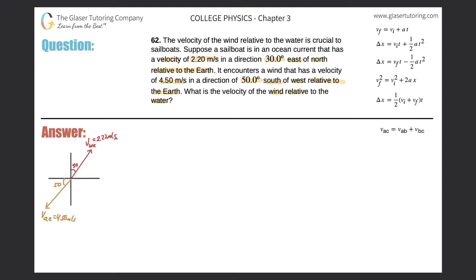So first, I sketched a little picture here. Here's a coordinate system and here are the two vectors being described. The first one is the velocity of the water relative to the earth, and that velocity is 2.20 meters per second at an angle of 30 degrees east of north. The second vector is 4.5 meters per second at a direction of 50 degrees south of west relative to the earth — that's the wind, which I'm calling air (A) instead of W, since water also uses W.